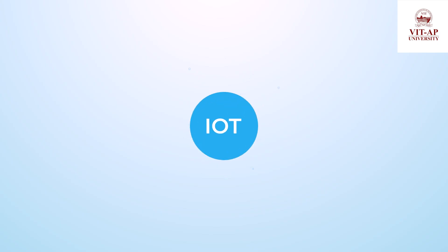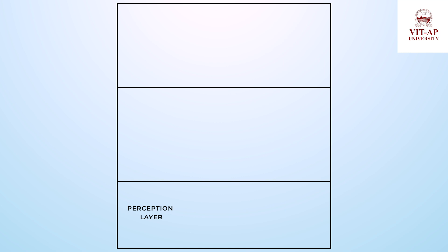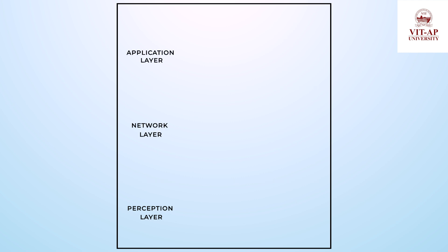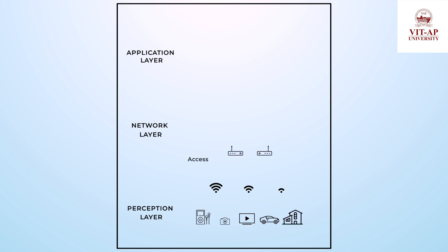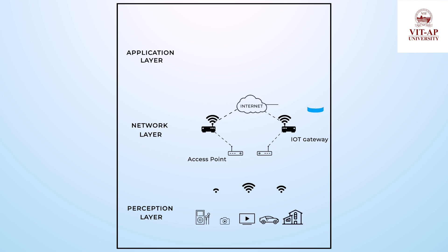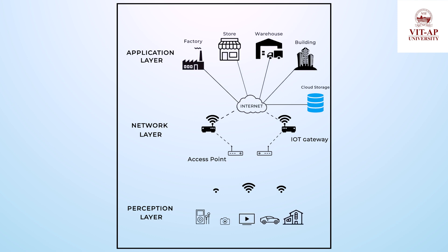Let's have a look at the general architecture of IoT network. The architecture can be divided into three layers, namely the lower perception layer, the middle network layer and the upper application layer. The perception layer consists of sensor nodes which can collect data from the surrounding and transmit it to the network layer using the access point and the IoT gateway devices. The network layer uses various communication protocols to transmit the data to the destination. Finally, in the application layer, all the applications are carried out.